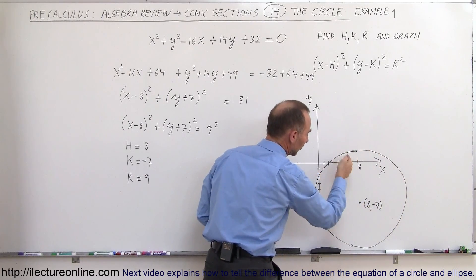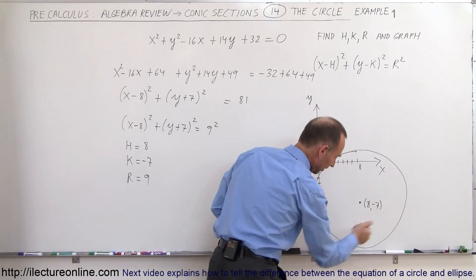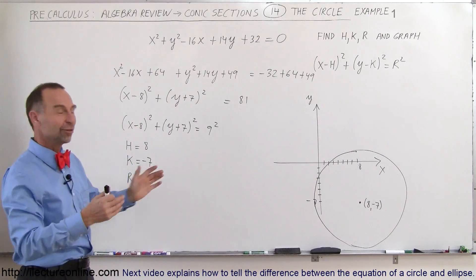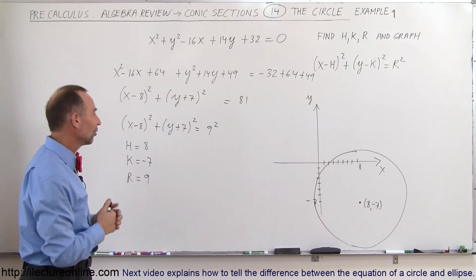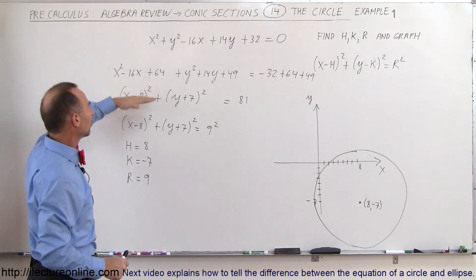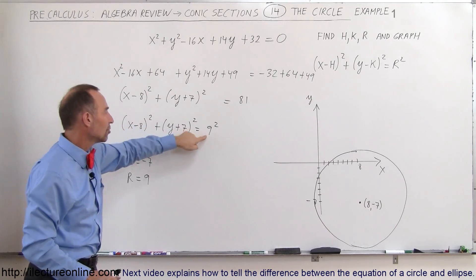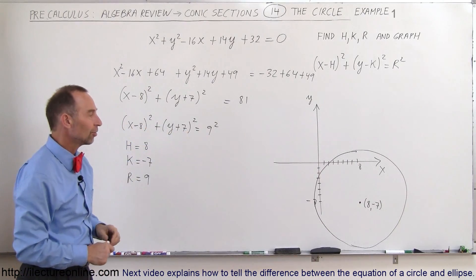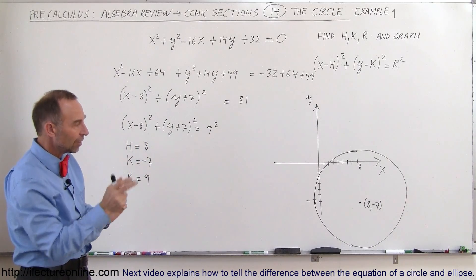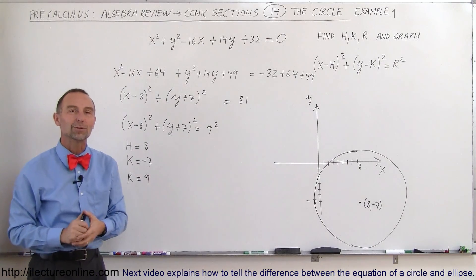Since I had kind of a lack of board space down there, I didn't quite get it to be a circle, but close enough for us. That's how we go ahead and draw a circle: you get the equation, you put it into the standard form like this, then you can read off your h, your k, and your r, and then you go ahead and find the center of the circle, find the radius, and draw the line around it so that every point on the circle is nine units away from the center. That's how we do that.